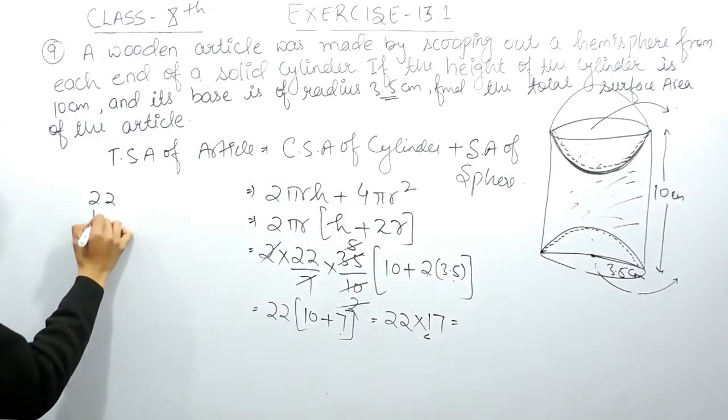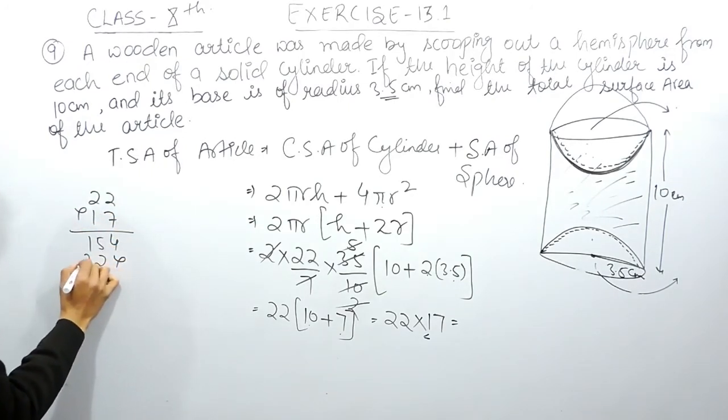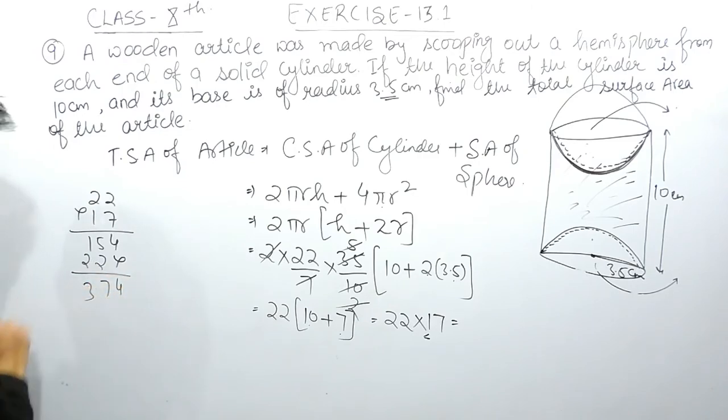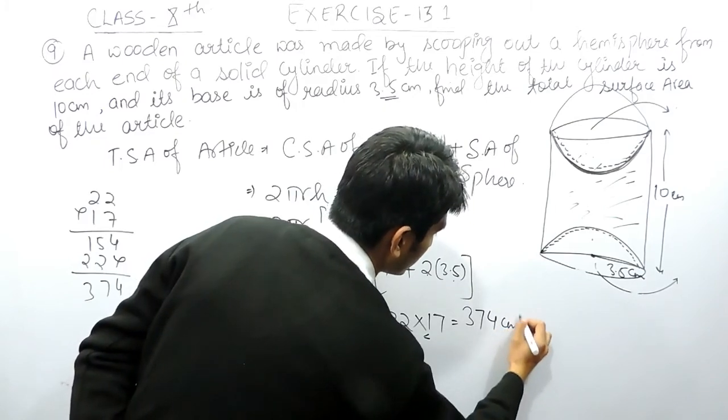So 22 is multiplied by 17. So this is 54, this is 22, 4, 7, 3. So the answer will be 374 cm².